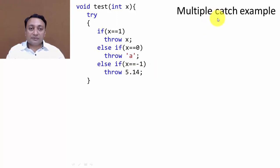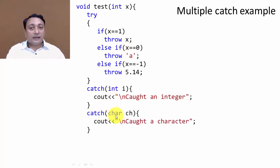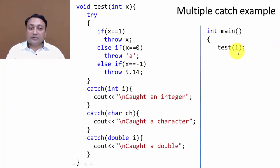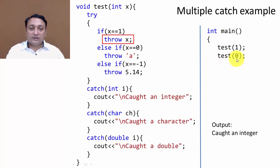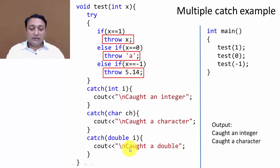For all these throws we need multiple catch statements. The first catch block has an integer argument and handles integer exceptions. The second catch has a character argument for character exceptions. The third catch has a double argument for double exceptions. In main, calling test with argument one throws an integer exception; with argument zero throws a character exception; and with argument minus one throws a double exception, each caught and displayed accordingly.